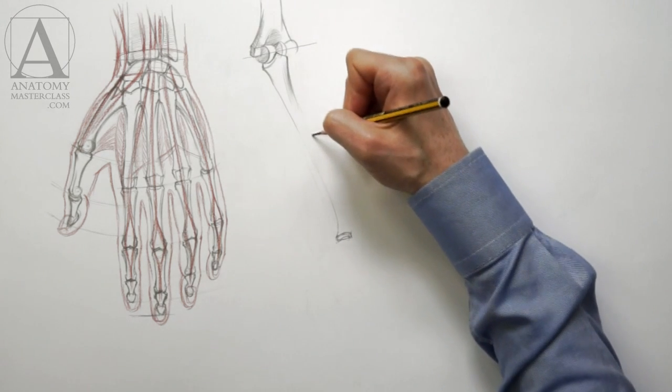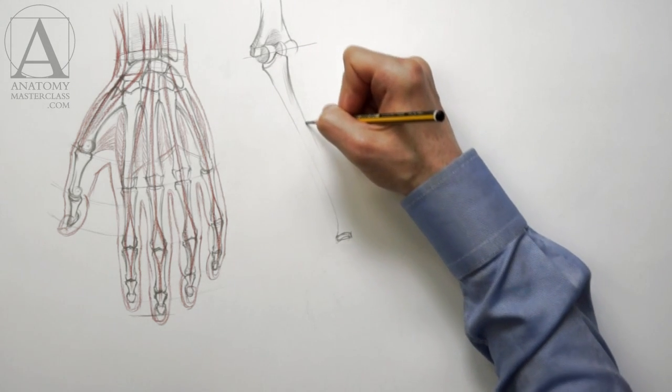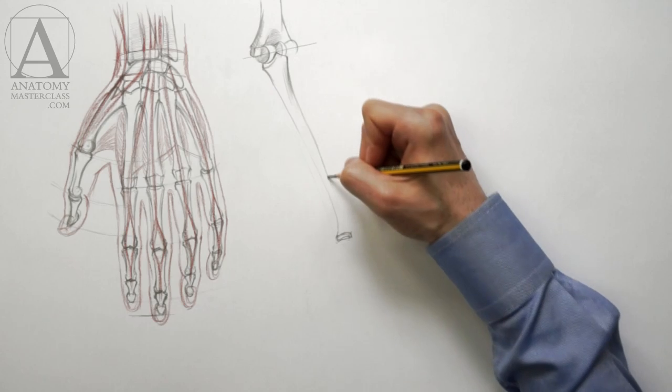The elbow joint is called a hinge joint because the ulna swings at the lower end of the humerus like a hinge.